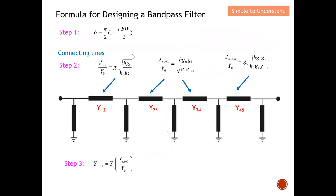After establishing the quarter wavelength, we apply five steps to implement a bandpass filter on microstrip line. Step one calculates the beta value using the fractional bandwidth. Steps two and three allow us to calculate the admittance for the connecting lines. There are four connecting lines, and after completing steps two and three we will obtain all their admittances.